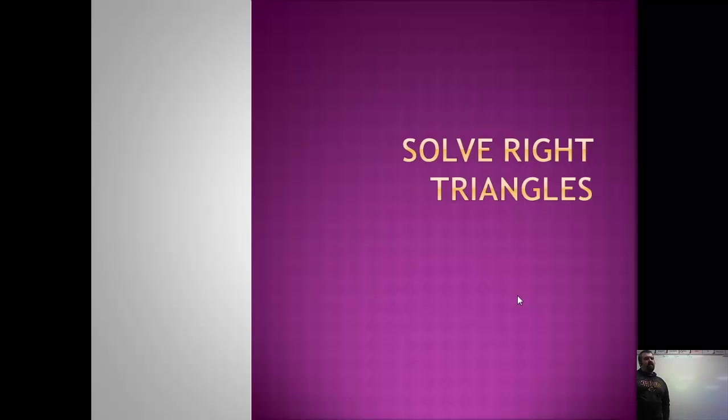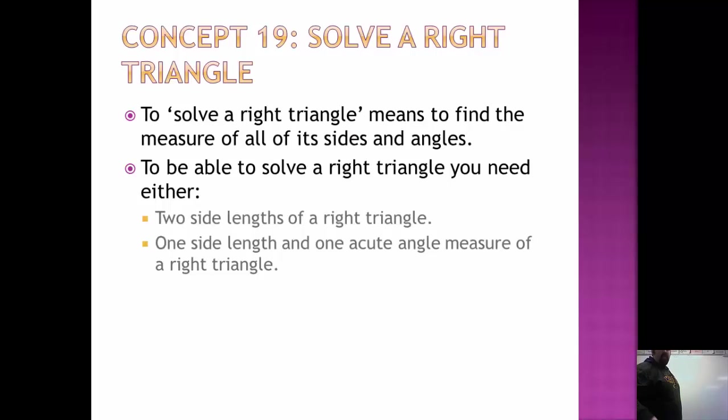Good evening, class. Today we're looking at solving right triangles. What we're trying to do is solve a right triangle, which means we're trying to find all the unknown information. So solve a right triangle means you find all the missing sides and angles to find all the measures. To be able to solve a right triangle, you need either two side lengths of a right triangle, or one side length and one acute angle measure of a triangle.